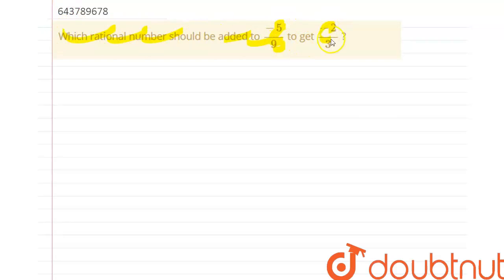Which rational number should be added to minus five by nine to get minus two by three? In the solution, let's assume the added number be x. So minus five by nine plus x must be equal to minus two by three.